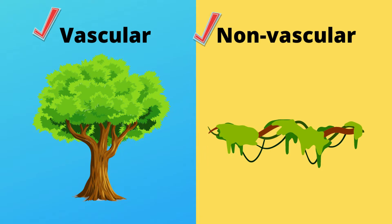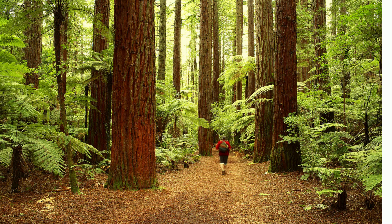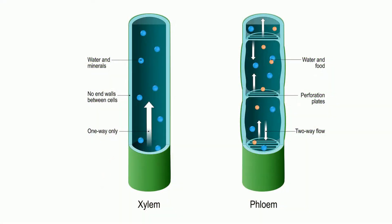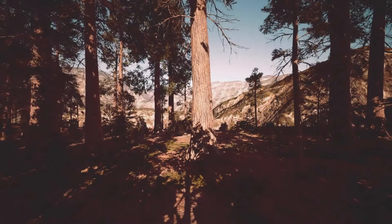Vascular plants have vascular tissue that allows them to grow larger in size. There are two types of vascular tissue: xylem, which transports water, and phloem, which transports sugar throughout the plant. This allows some vascular plants to grow very large.